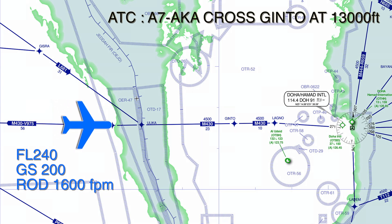ATC comes in, alpha 7 alpha kilo alpha, crossed Ginto at 13,000 feet. So when should we start the descent?